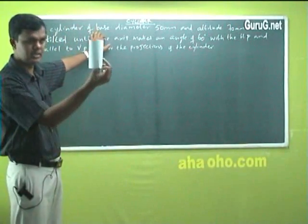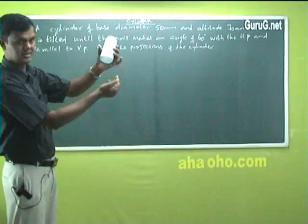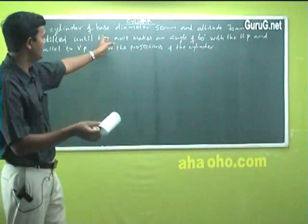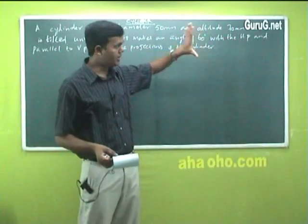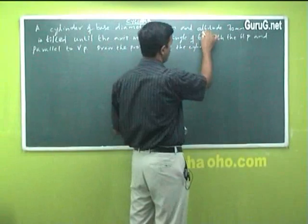This question reads what? A cylinder of base, this is cylinder, this is base, it is round. Cylinder of base diameter 50 millimeter and altitude - what is altitude? Altitude means height.